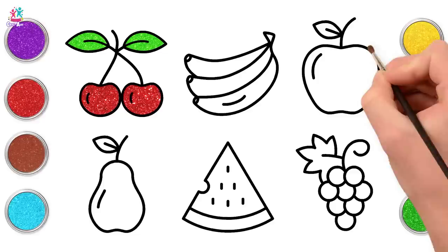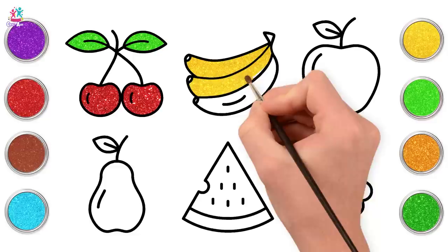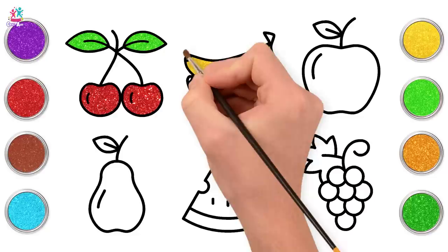Next is going to be the bananas. Yellow, because they're going to be nice and ripe bananas. Have you ever tried having banana with honey? It's amazing, especially in a sandwich. Round for the ends of our bananas. And the stem.